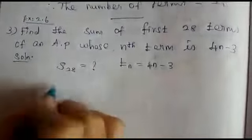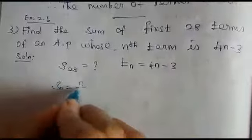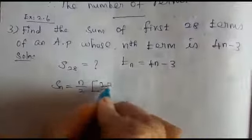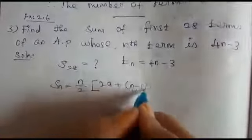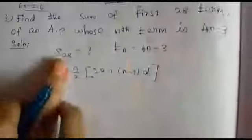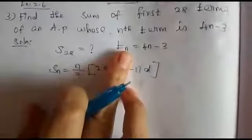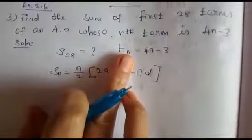What is the Sn formula? Sn equals n by 2, 2a plus n minus 1 into d. Here only the general term is given, so first we want to find the sequence.